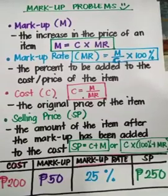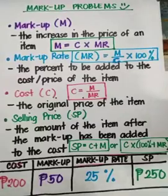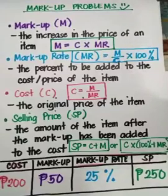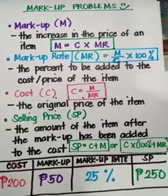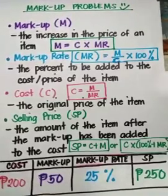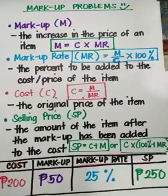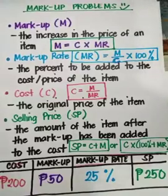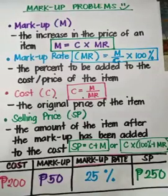And the last one, selling price. When we say selling price, that's the amount of the item after you added the markup to the original cost. There are two formulas to solve for the selling price depending on what is given in the problem. The first formula is to add the cost and the markup.